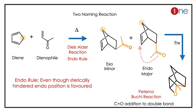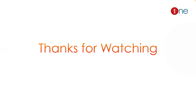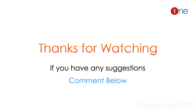The concept you have to learn here is the endo rule in the Diels-Alder reaction. The Diels-Alder reaction always prefers the endo product even though it is theoretically hindered. That's all from this video — thanks for watching.